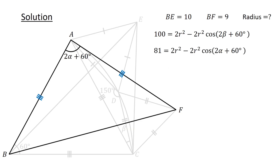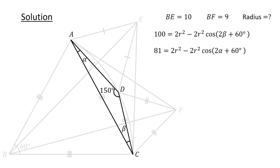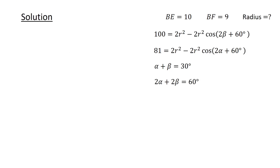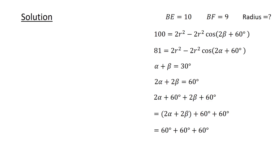To proceed, let's find the relationship between alpha and beta by considering triangle ACD. Since the interior angles of a triangle sum to 180 degrees, we have alpha plus beta plus 150 degrees equals 180 degrees, or alpha plus beta equals 30 degrees. Thus, 2 alpha plus 2 beta equals 60 degrees. The sum of (2 alpha plus 60 degrees) and (2 beta plus 60 degrees), which can be rewritten as 2 alpha plus 2 beta plus 120 degrees, therefore equals 60 degrees plus 120 degrees, or 180 degrees.